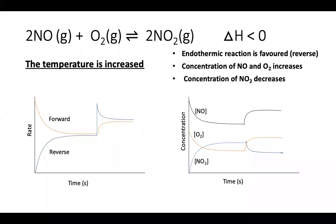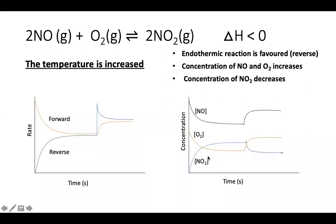In exams they may show a solid line and a dotted or dashed line instead of colours. On the concentration versus time graph when temperature is increased: since the reverse reaction is favoured, the concentration of NO goes up, the concentration of O₂ goes up, and the concentration of NO₂ goes down.